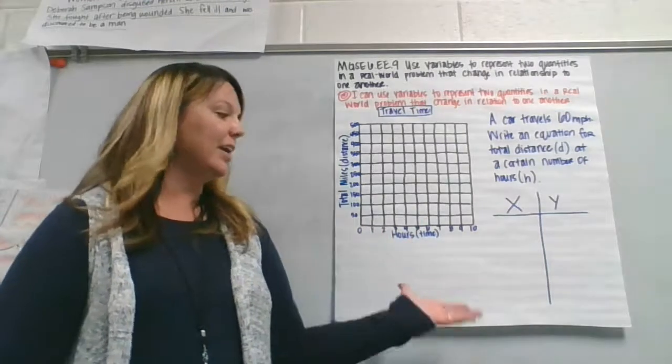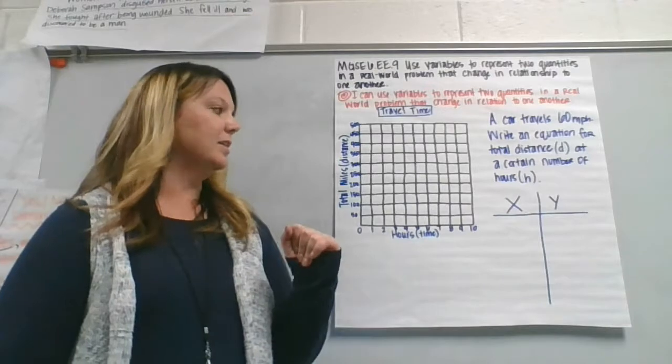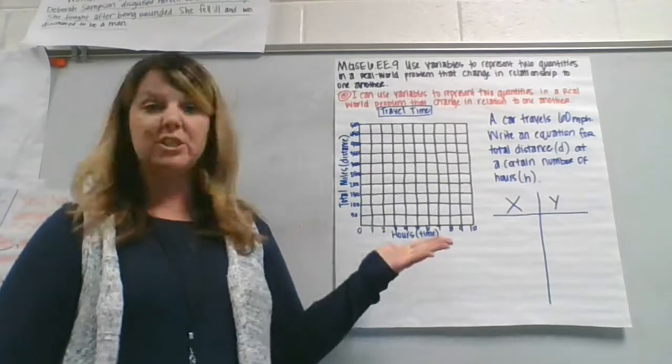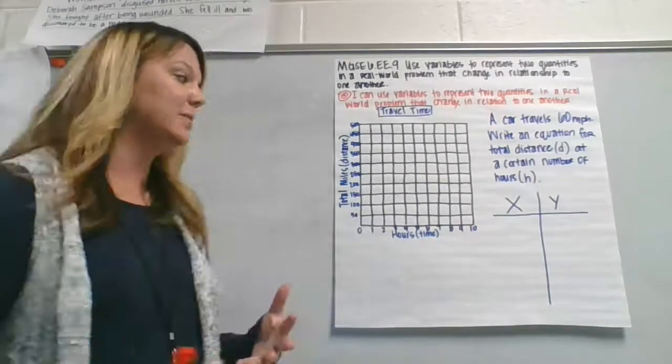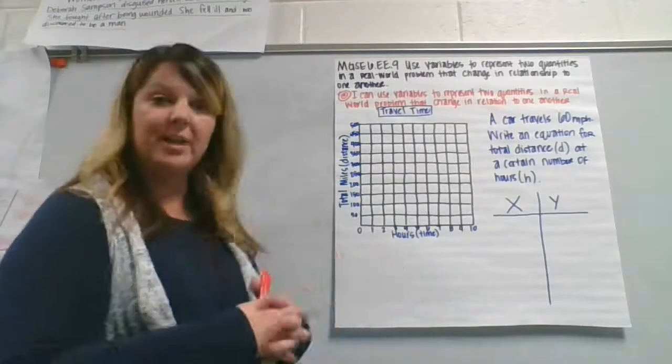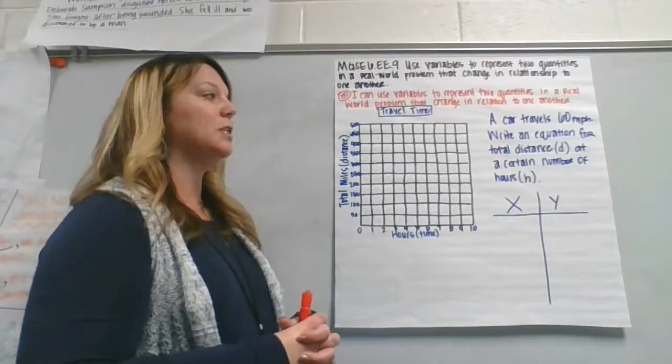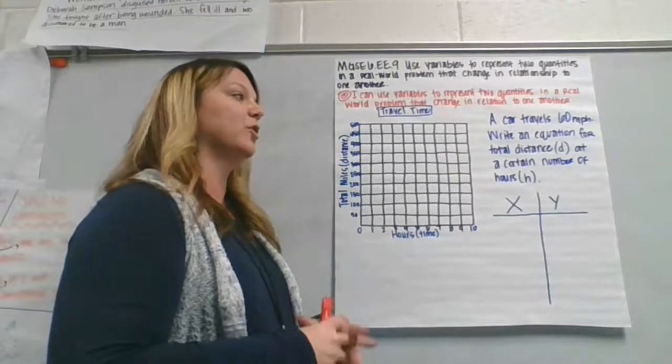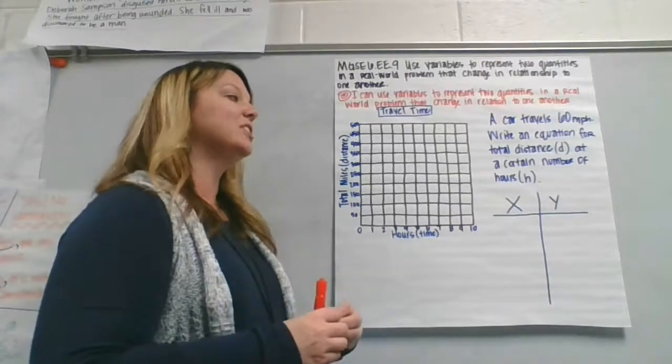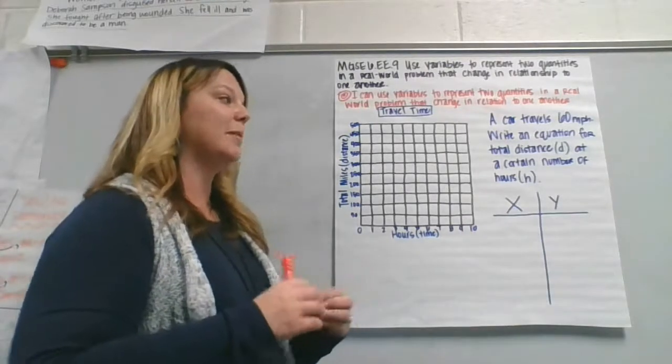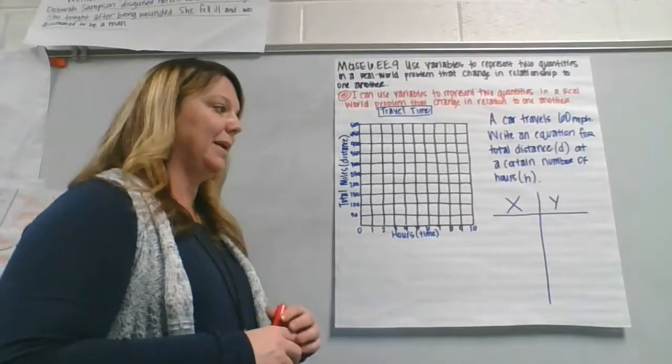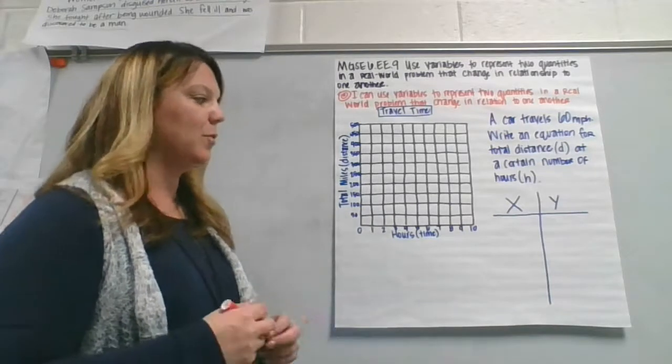What you have here is a graph with two quantities on it and a situation that we're going to solve for and plot onto our graph. It says a car travels at 60 miles per hour. Write an equation for total distance d at a certain number of hours, which we're going to let be h in our equation.